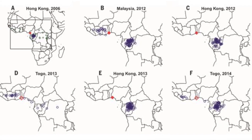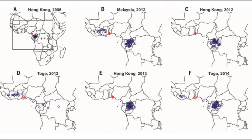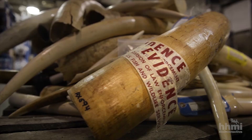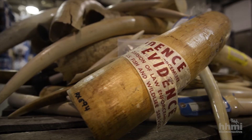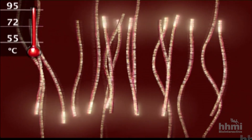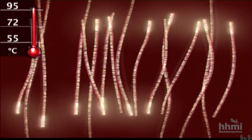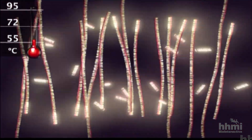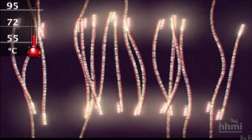Acting as forensic investigators, students identify the source of confiscated illegal ivory shipments utilizing PCR and DNA profiling in comparison with field-collected DNA from elephant dung samples.